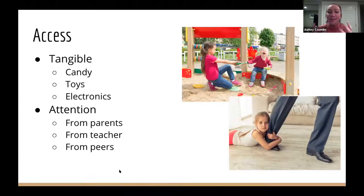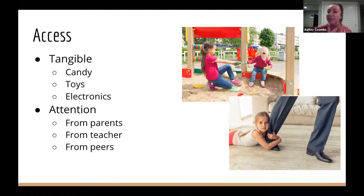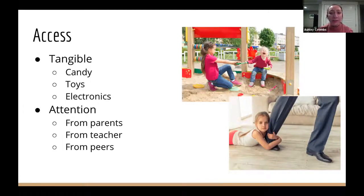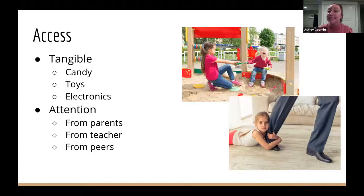For access, we typically want one of two things: access to a tangible — like candy, food, toys, or electronics — or access to attention, which could be from parents, a teacher, peers, or siblings. Those are the two things we're typically trying to get when we want access to something.